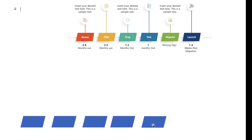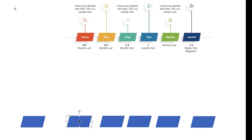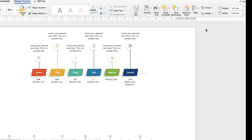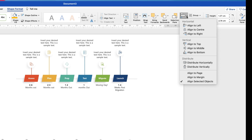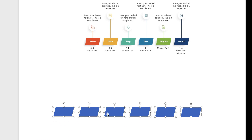Just one more. Now you don't have to worry about them being spaced out correctly. We're going to highlight them all — hold down your Command key whilst you select them — then go up to Shape Format, along to the Align tool, click on the drop down, and go to Distribute Horizontally. As you can see now, we've got equal gaps between each of our shapes.